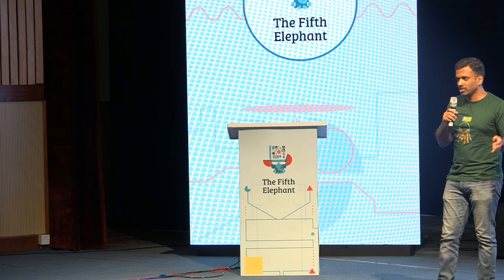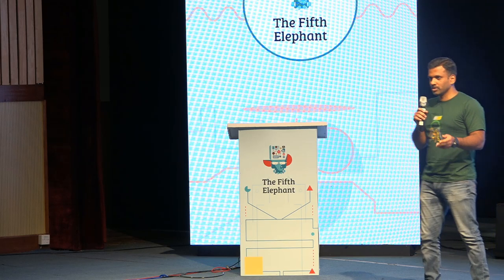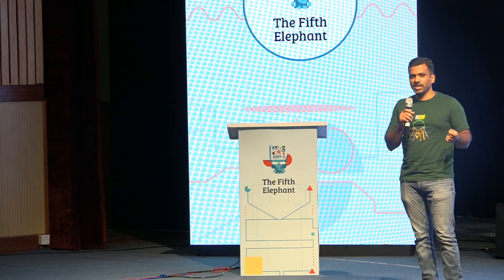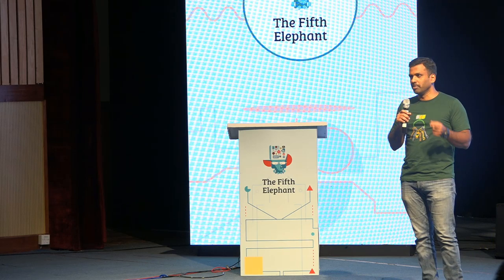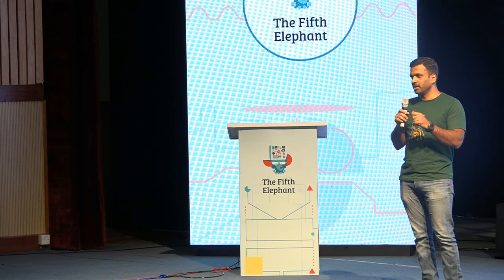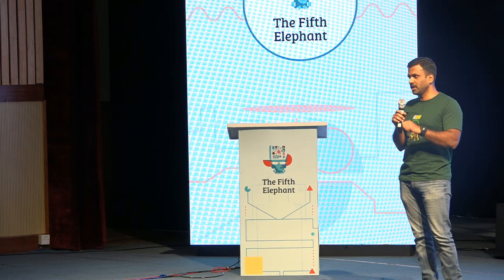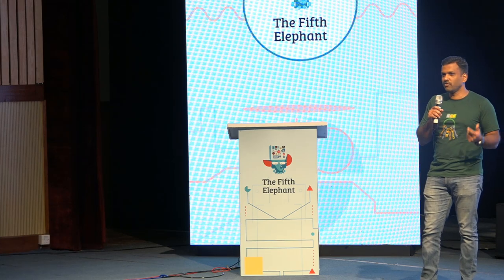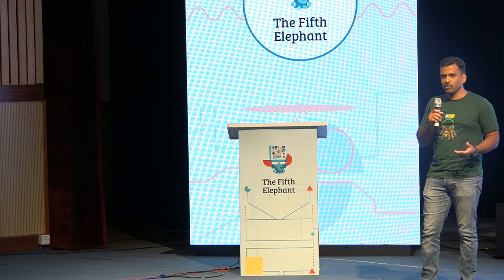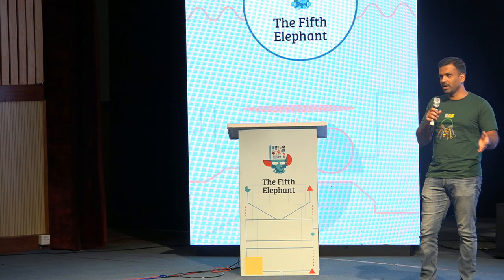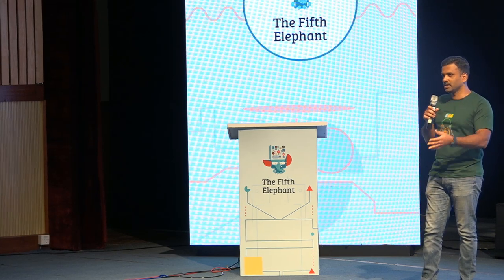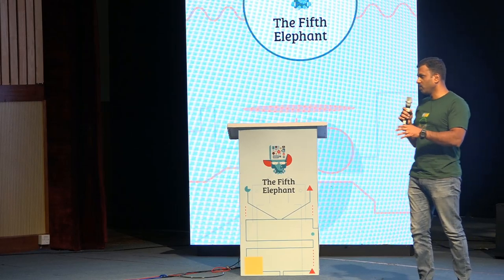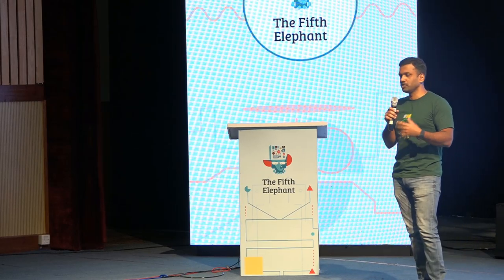I'm going to talk about one of the projects that I'm working on. It's called Mudpipe, which is basically an acronym for malicious URL detection for phishing identification and prevention. I'm just trying to figure out ways in which you can apply data and analytics and ML in an information security field to solve an infosec problem.